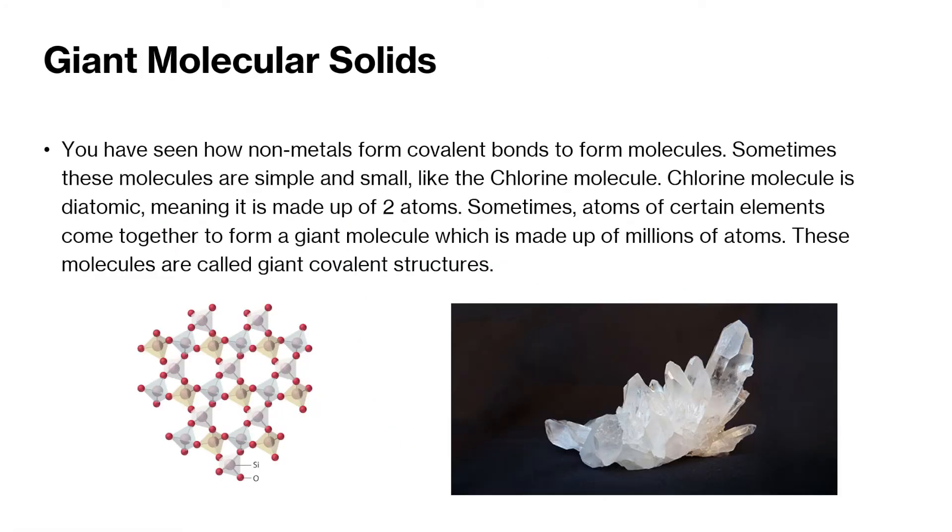Giant molecular structures, though. You have seen how non-metals form covalent bonds that form molecules. Sometimes these molecules are simple and small, like the chlorine molecule. The chlorine molecule is diatomic, meaning it's made up of two atoms. But sometimes some atoms in certain elements come together to form giant structures, which is made up of millions of atoms. These molecules are called giant covalent compounds. So we're looking at things like silicon oxide, usually silicon dioxide. These, like silicon, silicates, and stuff like that, create large, giant structures. And they're usually occurring in something that we call quartz. So they tend to form these large, repeated units. So that's why they're giant structures. Giant molecular structures are not simple molecular structures.